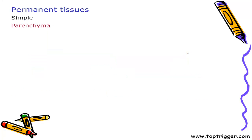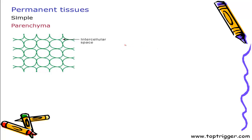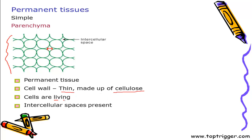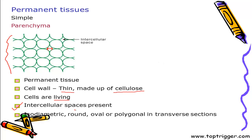Let's have a look at parenchyma. This is the structure of parenchyma. It is characterized by a simple structure having well-defined intercellular spaces. Cell wall is thin and made up of cellulose. It is living cells and characterized by prominent intercellular spaces. The cells are mostly isodiametric — round, oval or polygonal in transverse section.